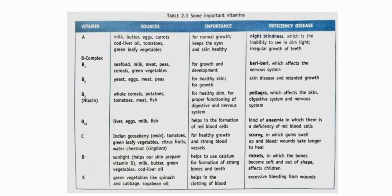Next is Vitamin B2. The sources are yeast, eggs, meat, and peas. It is important for healthy skin and body growth. If there is a deficiency of Vitamin B2, there can be skin diseases and retarded growth.